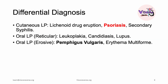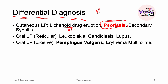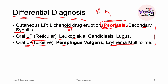Differential diagnosis is important for lichen planus because many other diseases can mimic it. Cutaneous lichen planus must be differentiated from lichenoid drug eruption — examples include ACE inhibitors and beta blockers — as well as psoriasis, one of the most important mimics, and secondary syphilis. For oral lichen planus, the reticular form should be differentiated from leukoplakia, candidiasis, and lupus. For the erosive form, differentiate from pemphigus vulgaris and erythema multiforme.